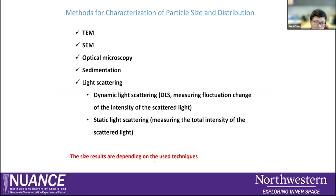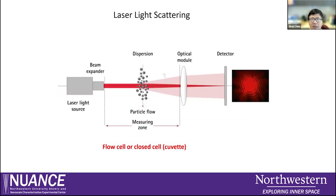The size result depends on the technique used. Different techniques give slightly different results because they measure different physical properties. For light scattering, a laser shines on particles that must be well-dispersed. If particles are agglomerated, they are treated as one big particle. Using a flow cell or closed cell, a detector captures the scattered light intensity, and based on intensity analysis, you get the particle size.